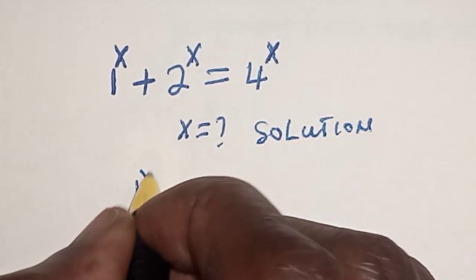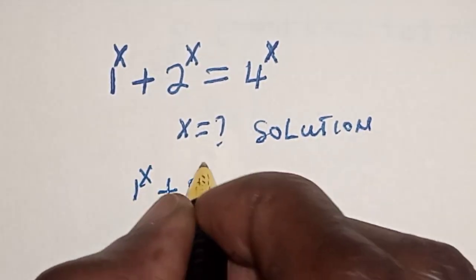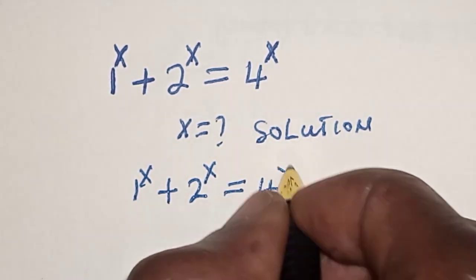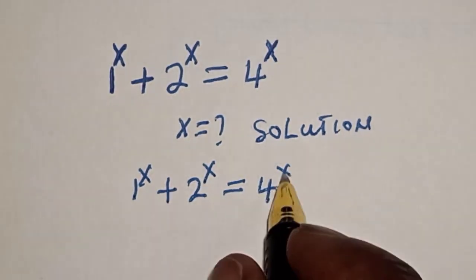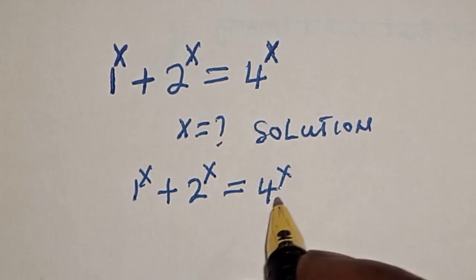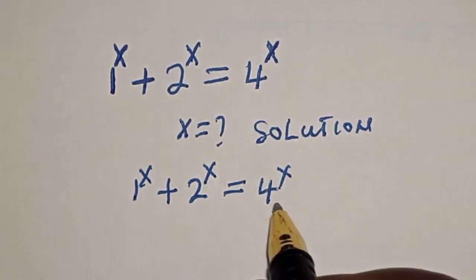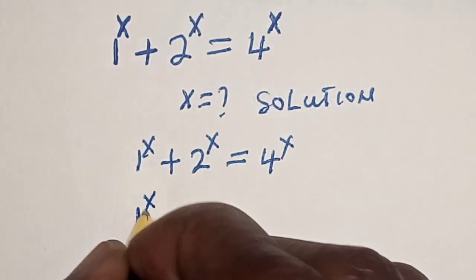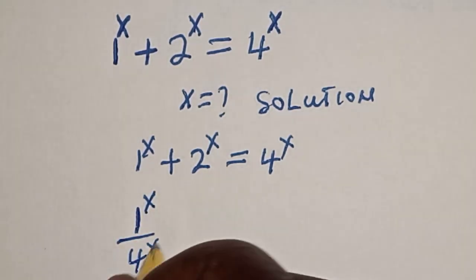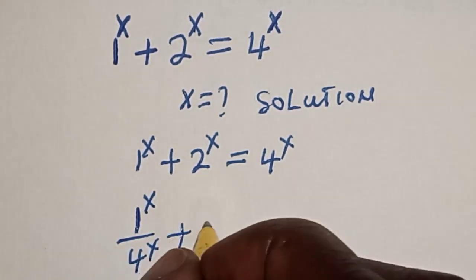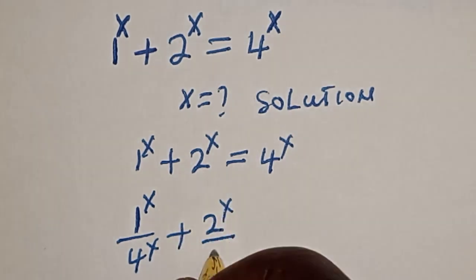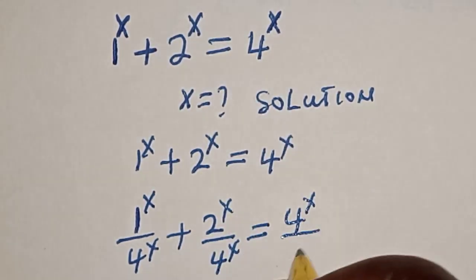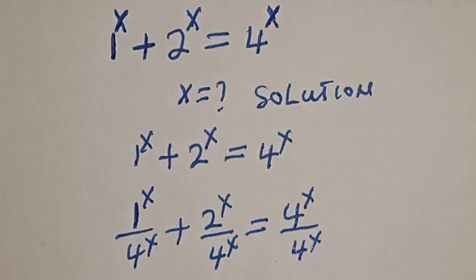We have 1 raised to power s plus 2 raised to power s is equal to 4 raised to power s. Now let's divide both sides by 4 raised to power s. That gives us 1 raised to power s divided by 4 raised to power s, plus 2 raised to power s divided by 4 raised to power s, is equal to 4 raised to power s divided by 4 raised to power s.